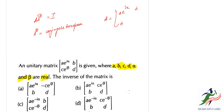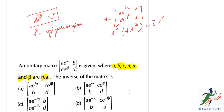We are given that the matrix has entries a, b, c, d with phase factors e to the power i·alpha and e to the power i·beta. From the unitary condition A·A-dagger equals I, we get A inverse equals A-dagger. This means A-dagger equals A inverse, and working out the conjugate transpose gives us entries a·e to the power minus i·alpha, b, c·e to the power minus i·beta, and d.